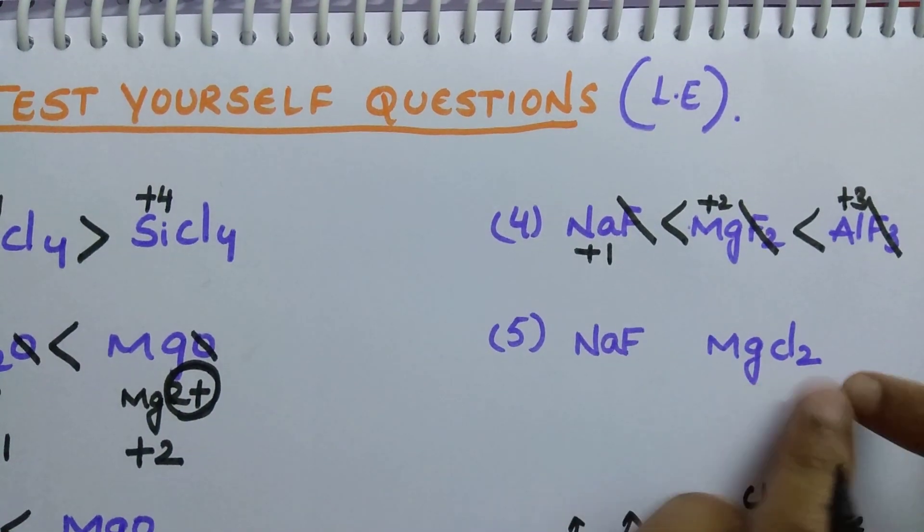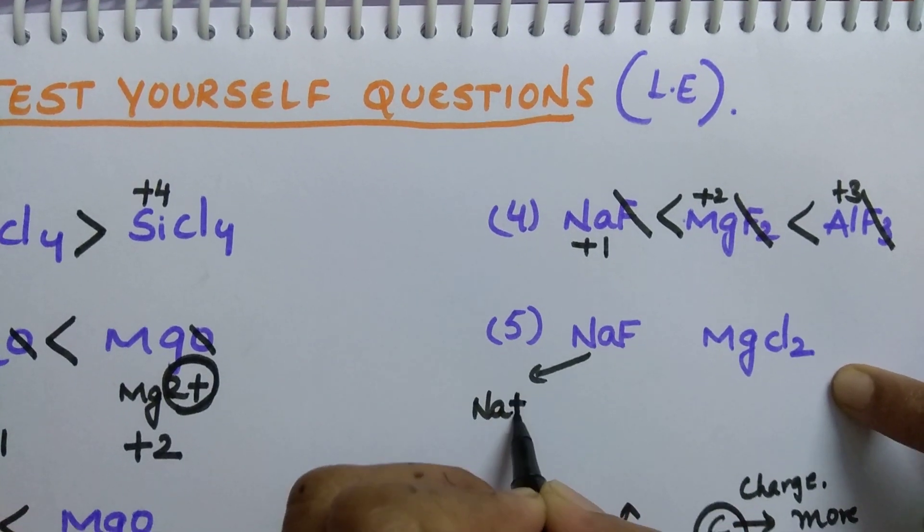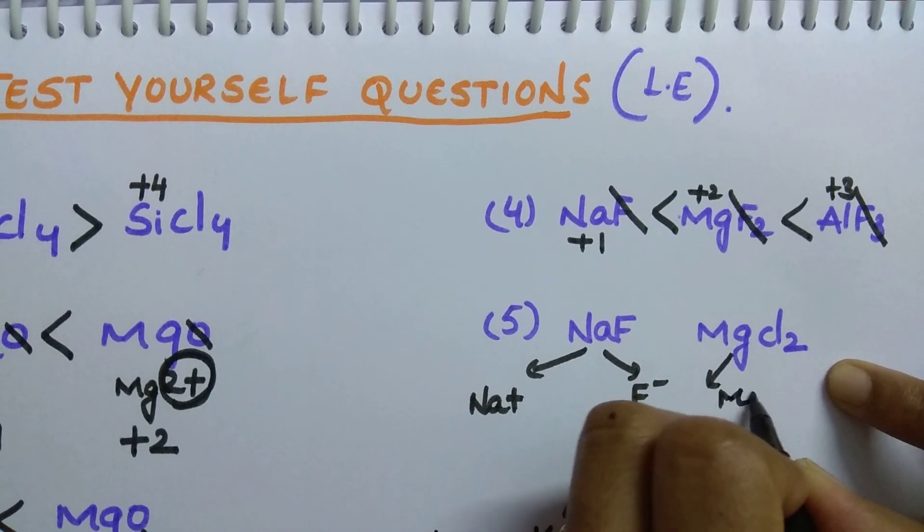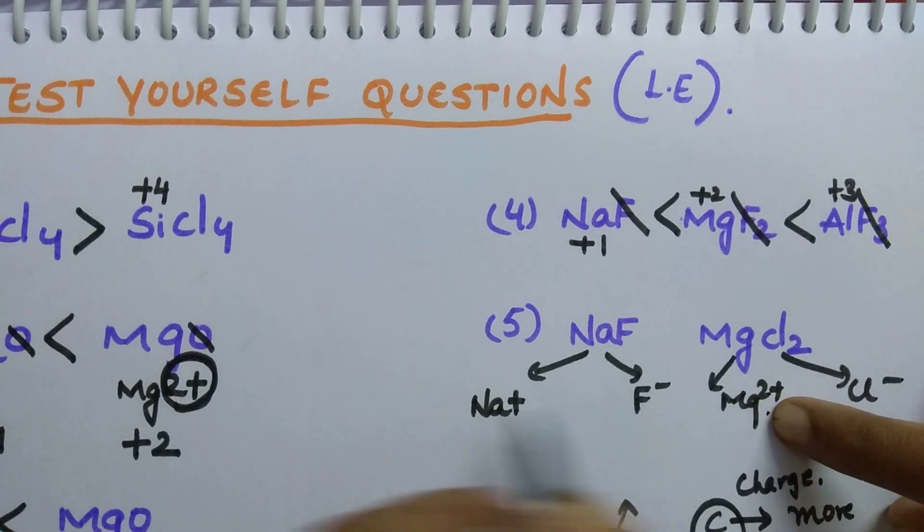Next, NaF, MgCl2. In this case, here Na plus is there. Here F minus. Here Mg2 plus. And here Cl minus. In these two cations, this cation is having higher lattice energy. It shows higher, smaller, higher charge. More will be the lattice energy.